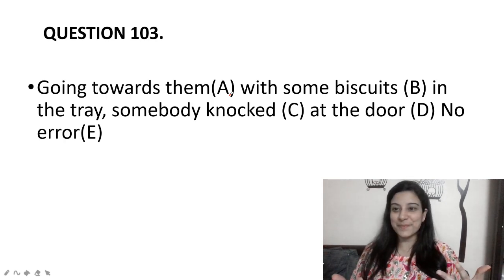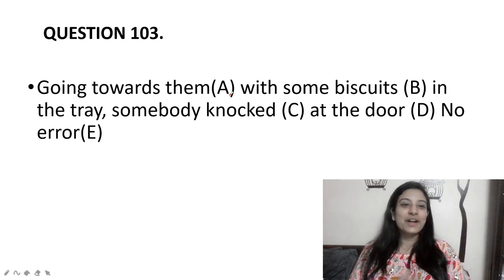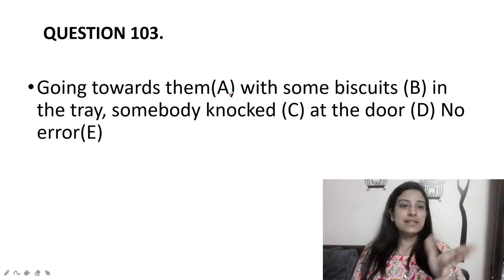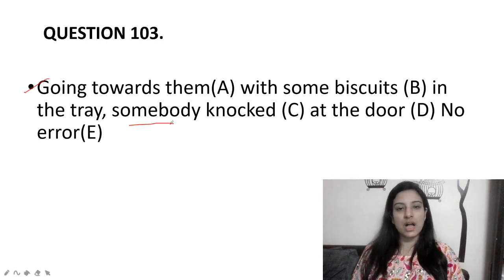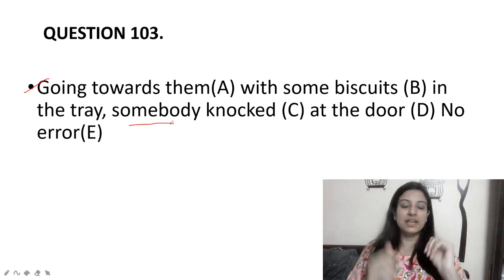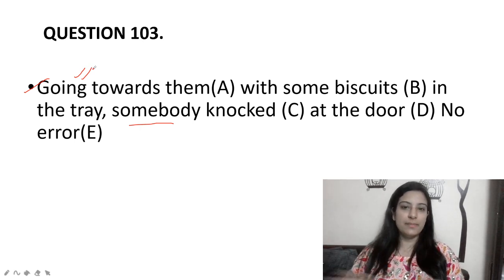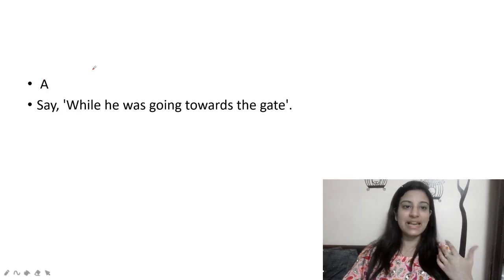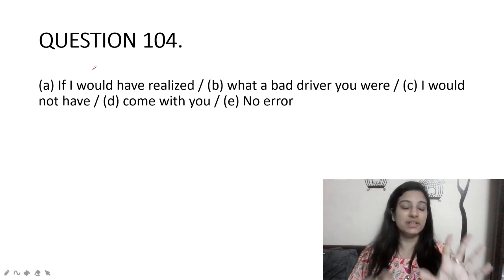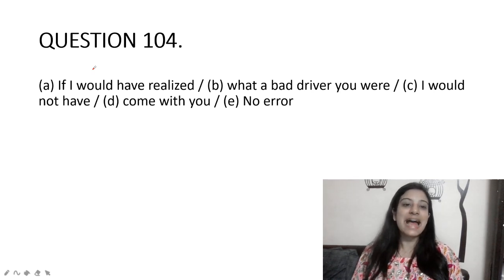Going towards them with some biscuits in the tray, somebody knocked at the door. This is the same dangling modifier issue. 'Going' needs a correct subject — but 'somebody' knocked at the door from outside; the person with the biscuits was inside. So the subjects don't match. It should say 'while I was going towards them' or 'while he was going' — a clear subject must be provided.